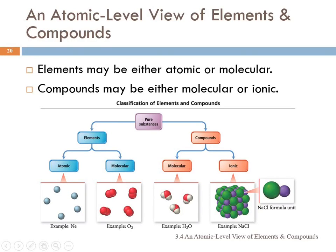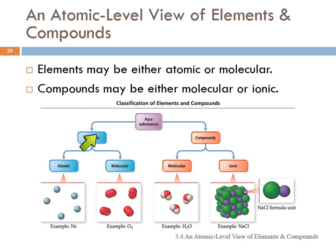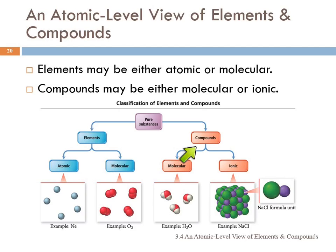Atomic level view of elements and compounds. Here's a flow chart that summarizes what we've been talking about. We've got pure substances with two categories: elements and compounds. Within elements we have atomic and molecular elements. Within compounds we have molecular compounds held together by covalent bonds, and ionic compounds held together by ionic bonds.